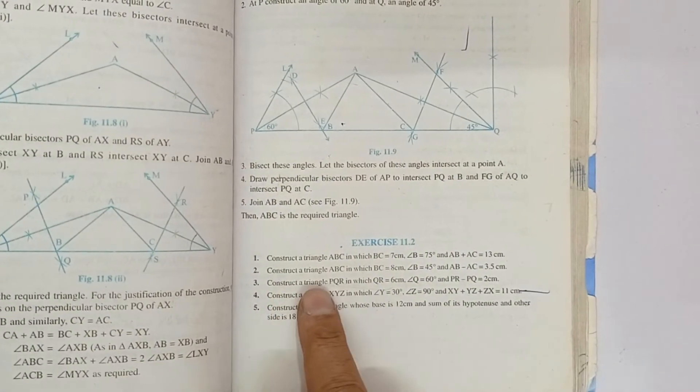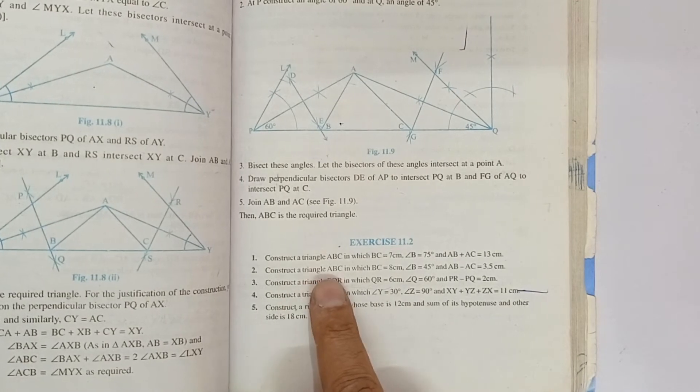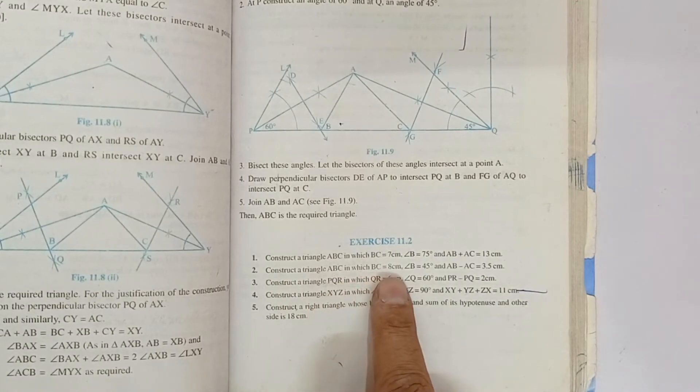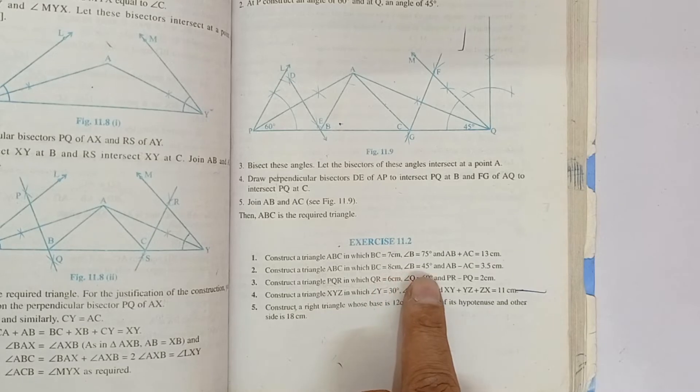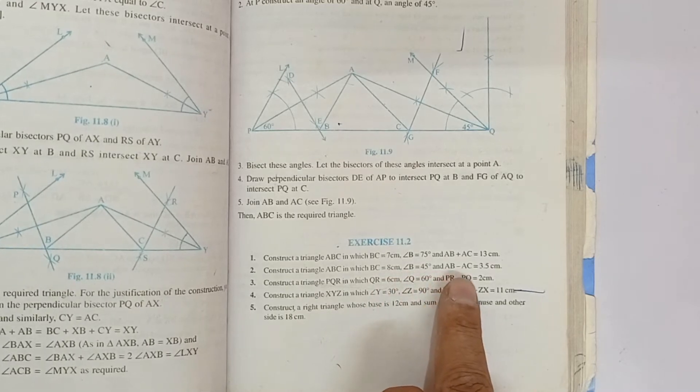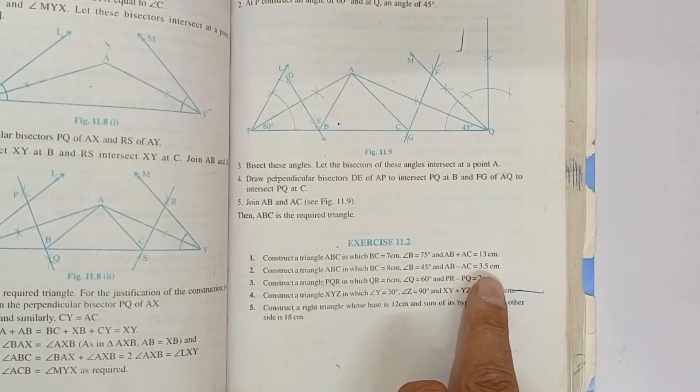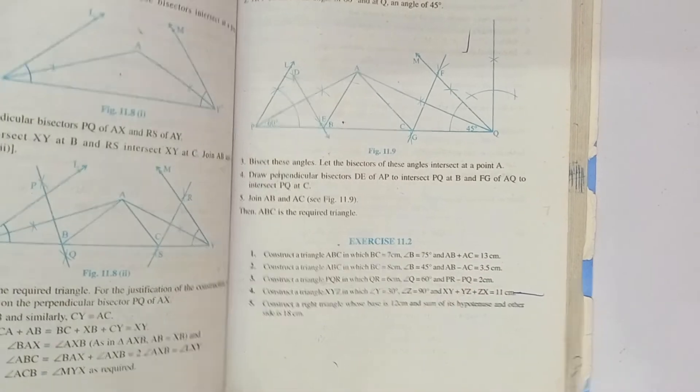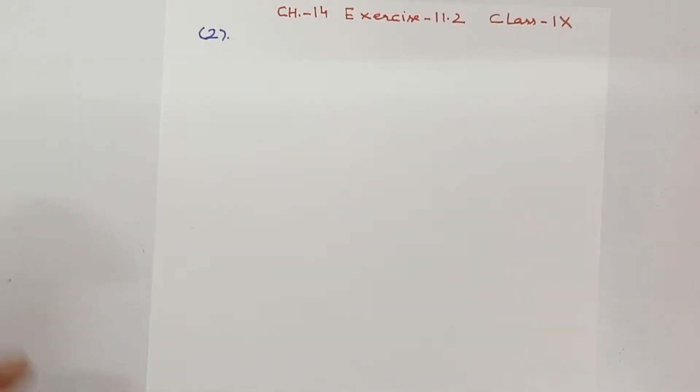So this question, all questions are important so see carefully. Construct a triangle ABC in which BC 8 cm, angle B 45 degree, AB minus AC is 3.5 cm. So, let's do it again.